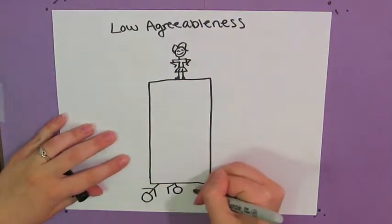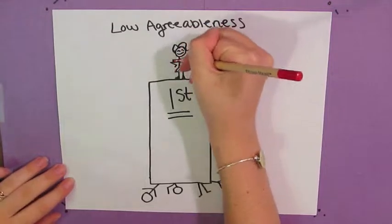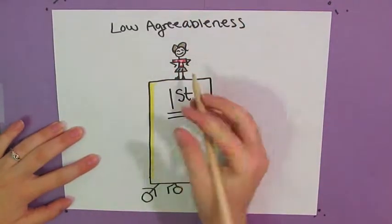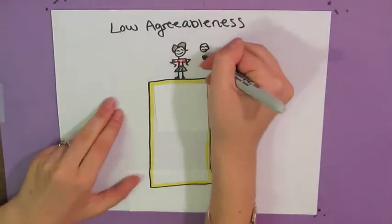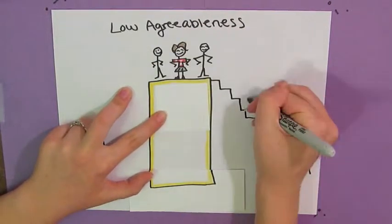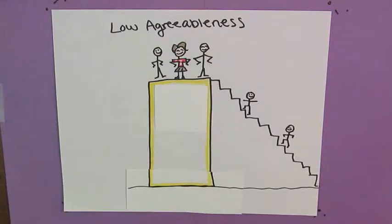Students with low agreeableness displayed competitiveness toward peers on campus or lack of social support resulting from wanting to be admired by others. The proposed treatment was development of assertiveness, problem-solving, and social skills that could facilitate effective functioning.